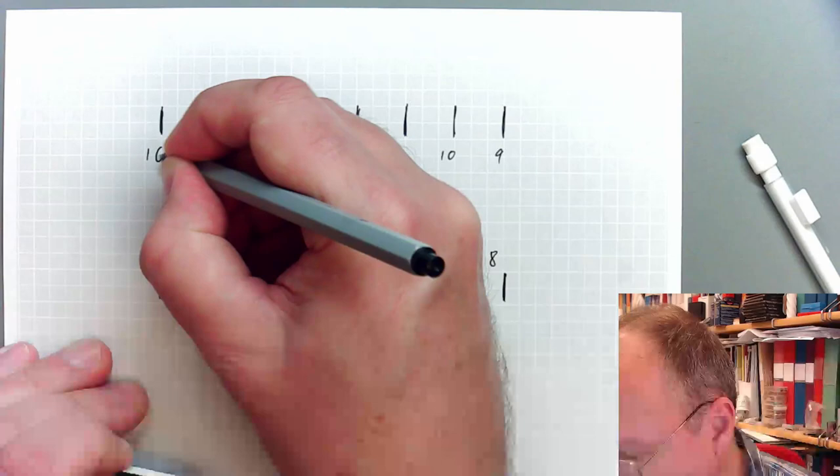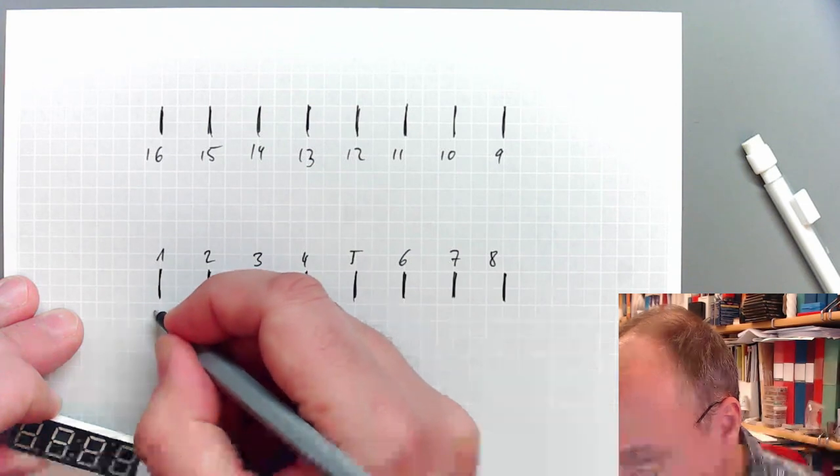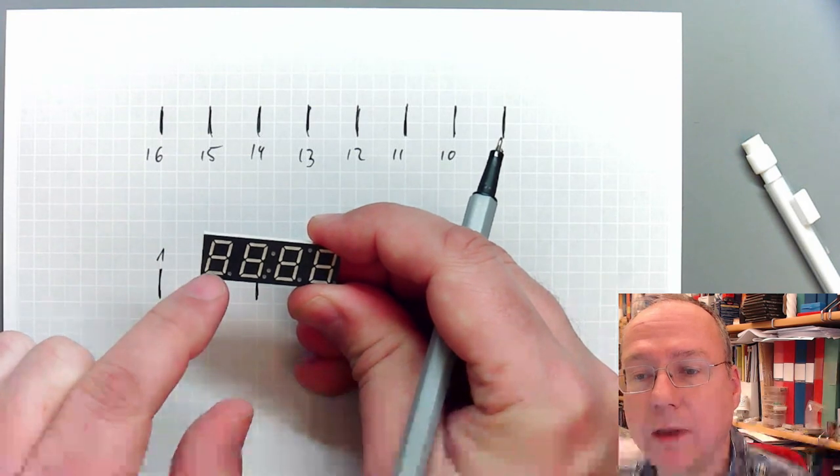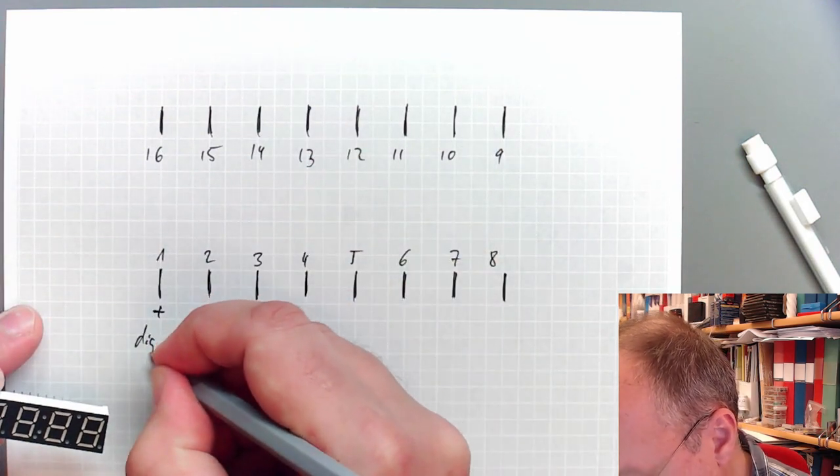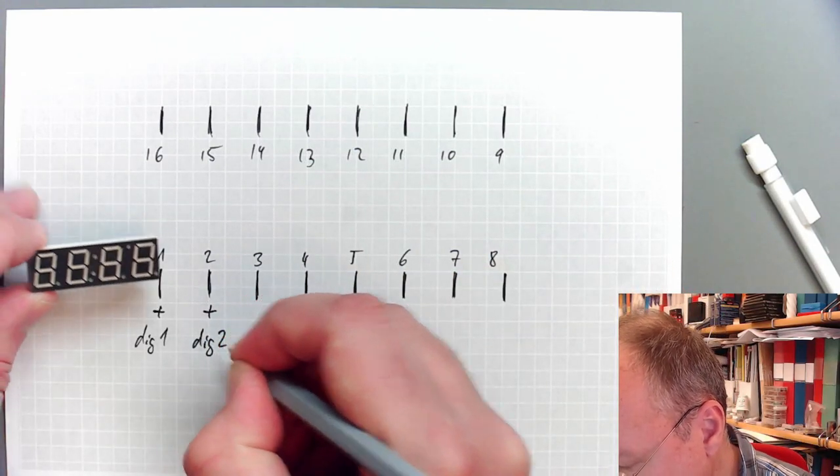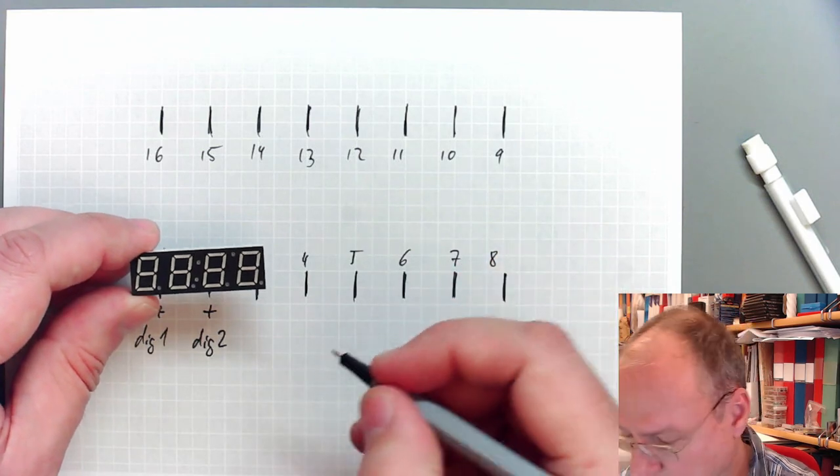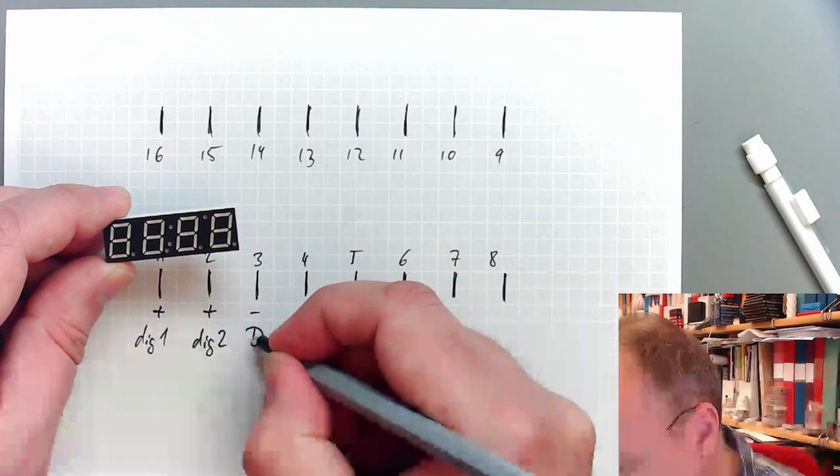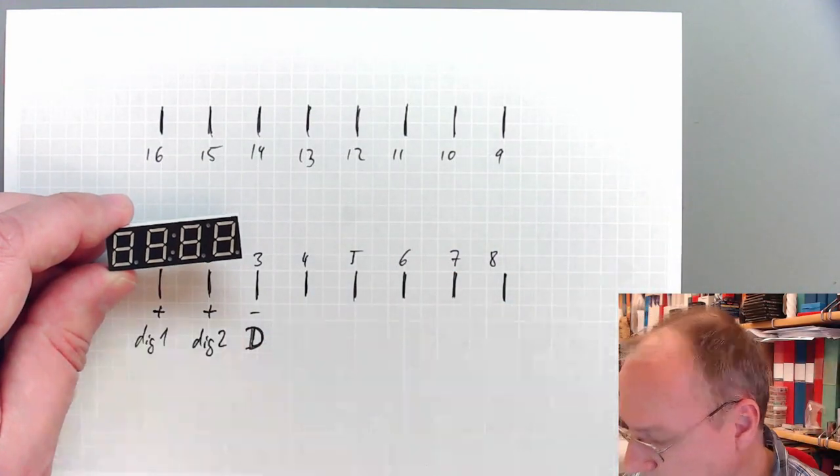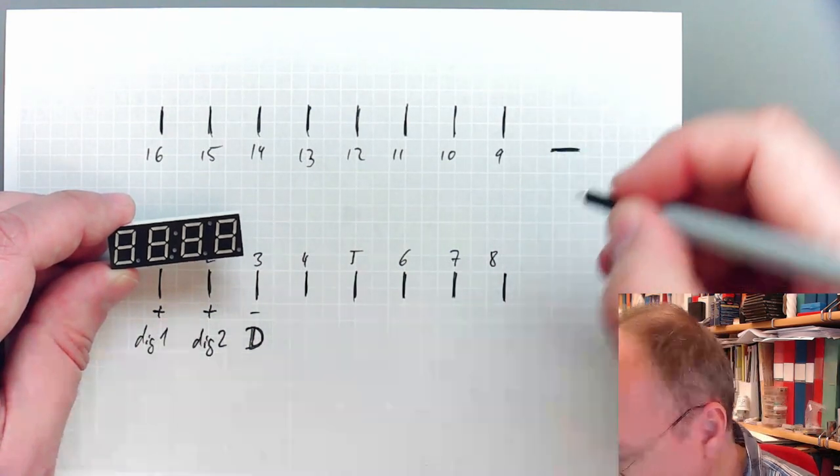And according to the data sheet now, this here is the positive side of all the LEDs in the first number, so digit number one. Then we have the positive side of all the LEDs in the second digit, and then we have the negative side of the segment D.